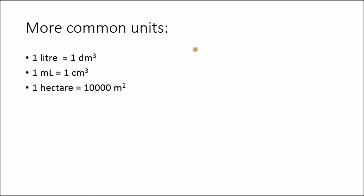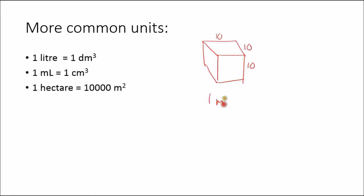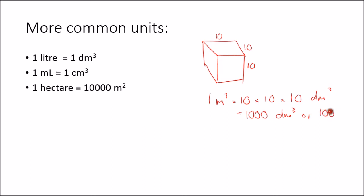If we want to convert liters into cubic meters, we think about a cubic meter. There are 10 decimeters in each meter — so 10 there, 10 there, and 10 there. So 1 cubic meter is 10 times 10 times 10 decimeters cubed, which is 1,000 decimeters cubed, or 1,000 liters. Whenever people talk about cubic meters, it's good to remember that it's the same as 1,000 liters.